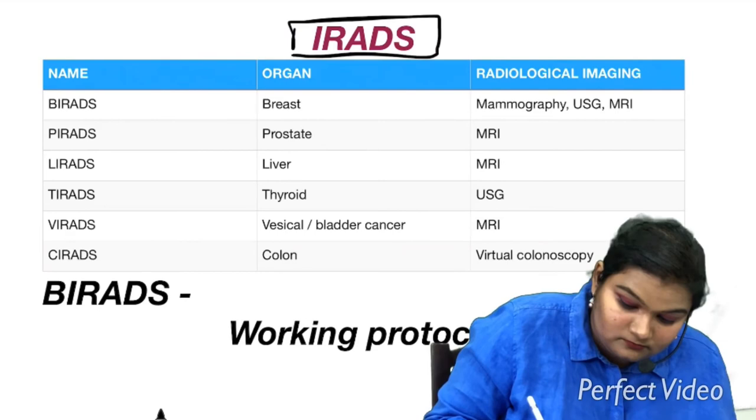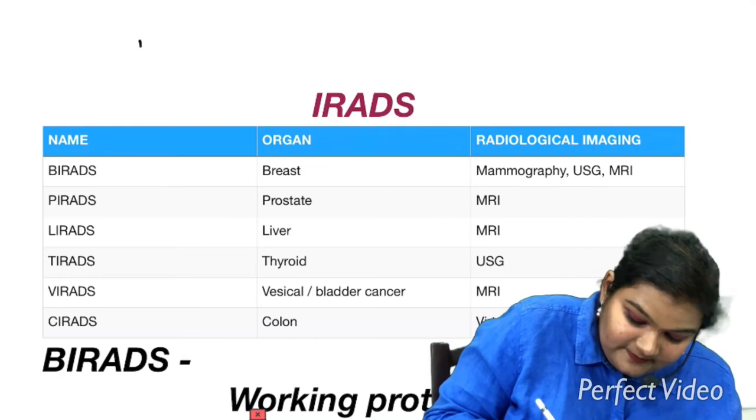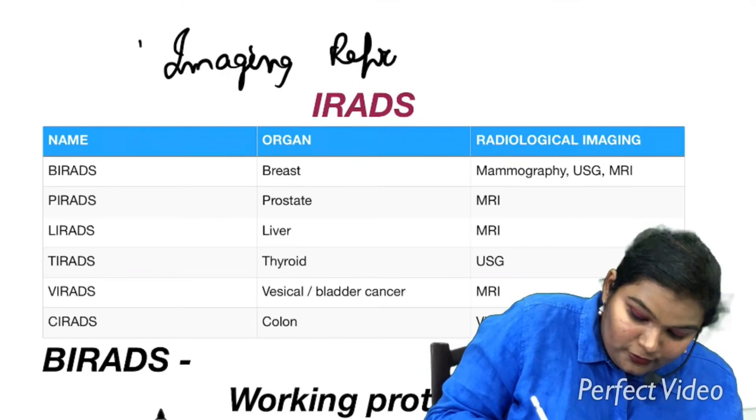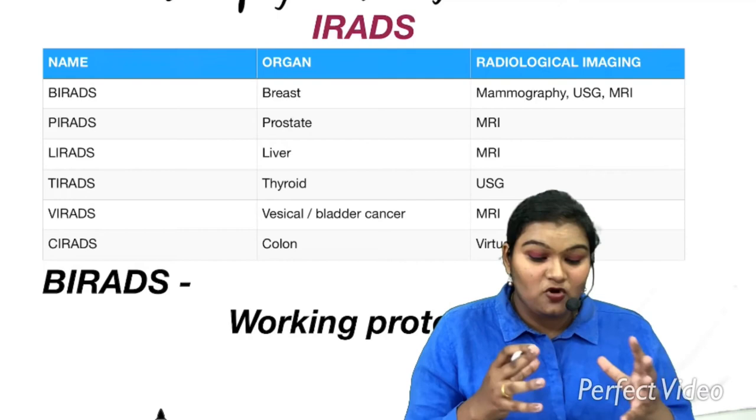What do you mean by IRADS? IRADS means imaging, reporting and data system. This is the long form of IRADS. The IRADS has different organs. It means, depending on the organs, IRADS varies.